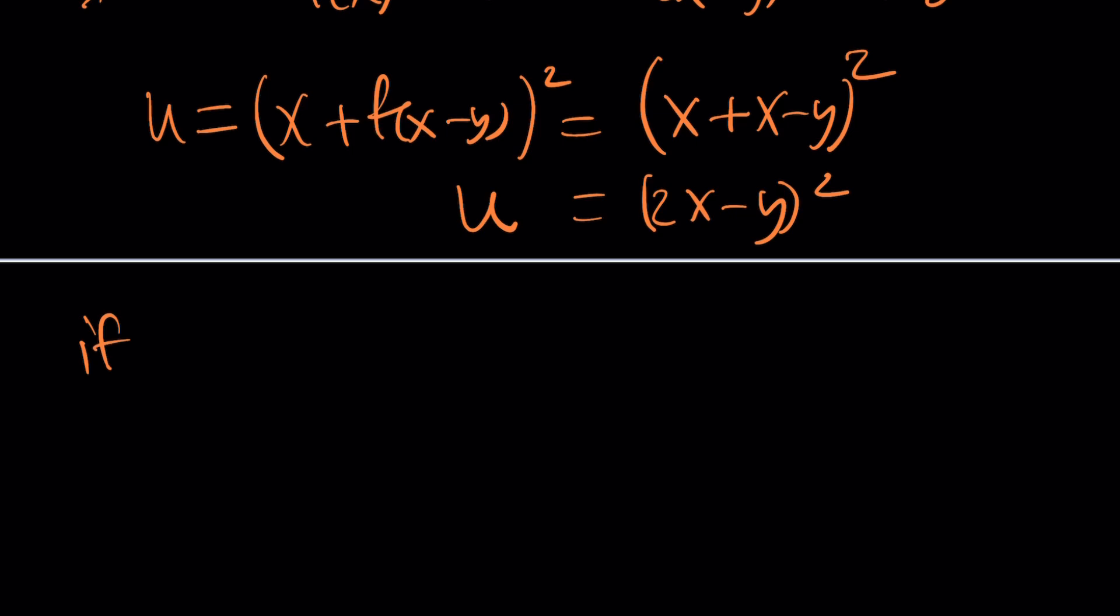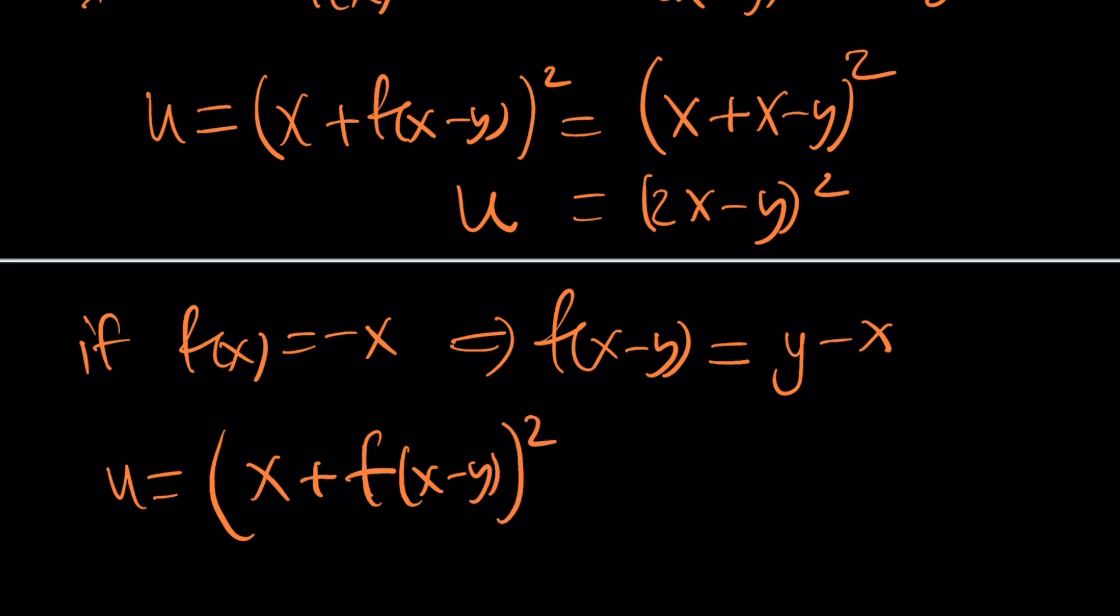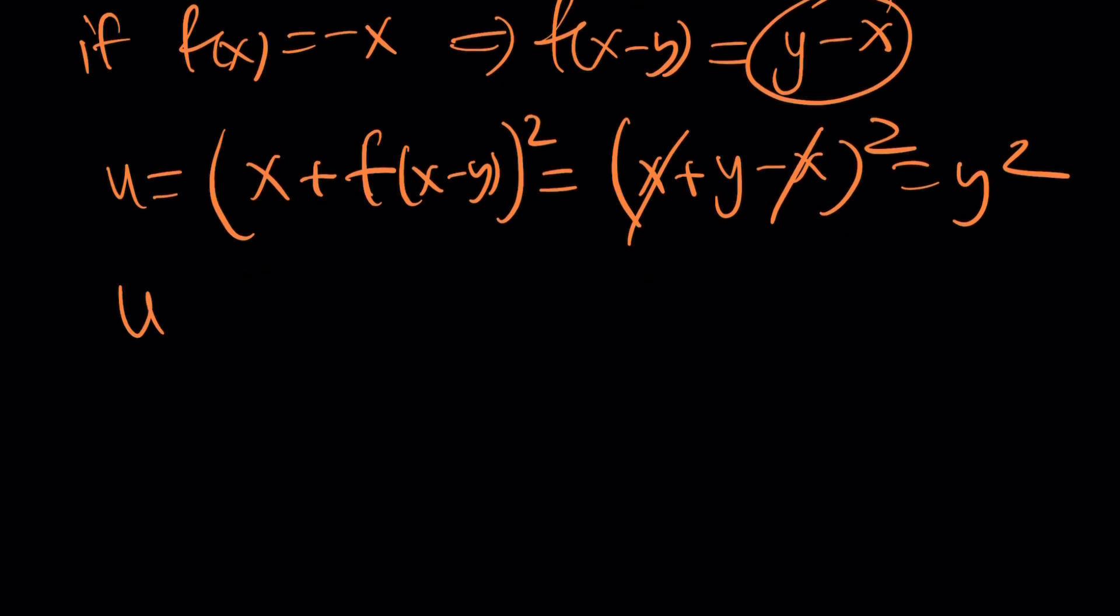What if f of x is equal to negative x? Then, f of x minus y, which appeared in our solution, remember, is going to be the opposite of x minus y, which is y minus x. And u is equal to the square, not the square root, sorry, x plus f of x minus y quantity squared. But if you replace f of x minus y with y minus x, uh-oh, x's cancel out, we end up with y squared. So, are you saying that u as a function of x and y can be y squared? Yeah, absolutely. You don't have to have both variables, but it's still a function of two variables. Isn't that interesting?